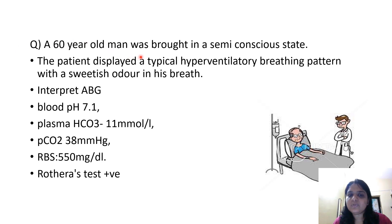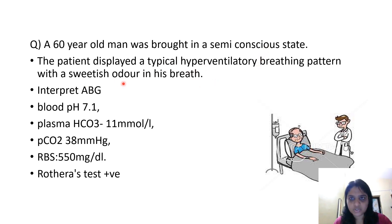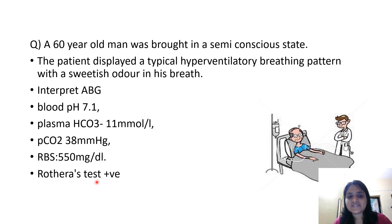Moving on to the next question. A 60-year-old man was brought in a semi-conscious state. The patient displayed a typical hyperventilatory breathing pattern with a sweetish odor in his breath. Interpret the ABG: blood pH 7.1, bicarbonate 11 millimoles per liter, PCO2 38, RBS 550, and Rothera's test is positive. The patient is in a semi-conscious state with a hyperventilatory breathing pattern. The sweetish odor is the smell of acetone, which we get in acidosis. The RBS is 550 and Rothera's test — a test for ketone bodies — is also positive, so it is a case of diabetic ketoacidosis. Blood pH is 7.1, which means it is acidosis.